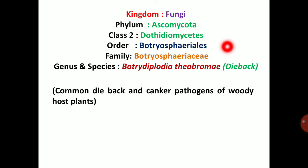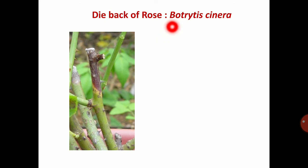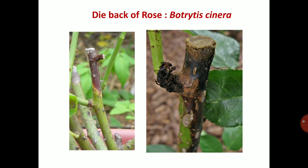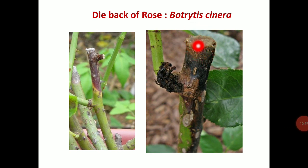Botryodiplodia theobromi causes die back disease and is a common die back and canker pathogen of woody host plants. Die back of rose is caused by Botryosphaeria species. The disease is the dying back of plant tissues from tip downwards. The pathogen mainly enters through pruning ends or cut ends, which makes it easy for the pathogen to enter, resulting in die back disease.